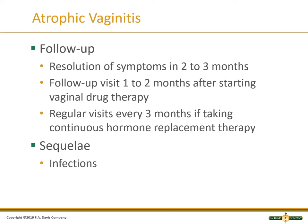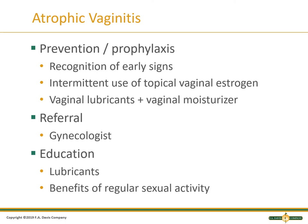Do a follow-up visit. If they are on hormone replacement, you do need to make sure every three months you're doing regular visits, checking whether they're having any concerns for DVTs, blood clots, or pulmonary embolisms. You can also have infections because anytime you insert creams or use lubricants, there's always that possibility. Prevention and prophylaxis: early signs, intermittent use of topical vaginal estrogen, vaginal lubricants and moisturizers. Unfortunately, we cannot stop nature and menopause is going to happen. Referring out to a gynecologist is often very helpful. If you have someone with atrophic vaginitis and they're still having symptoms you can't get under control, know what you don't know and refer them out. Educate about the lubricants as well as the benefit of regular sexual activity.